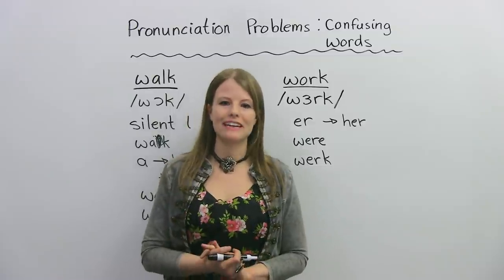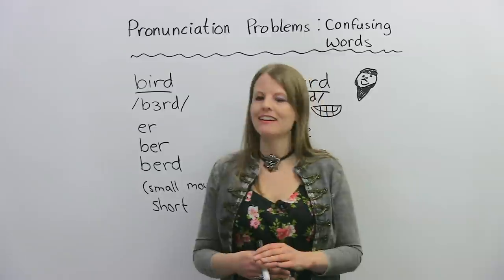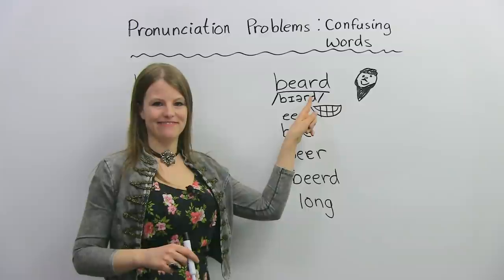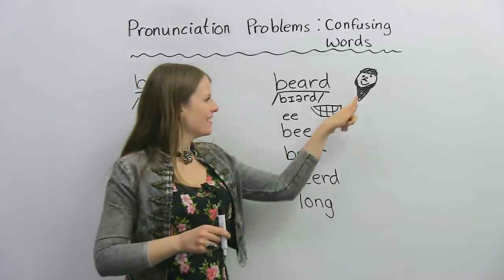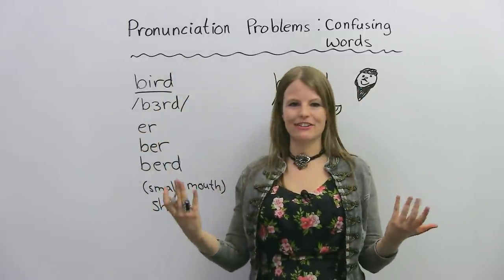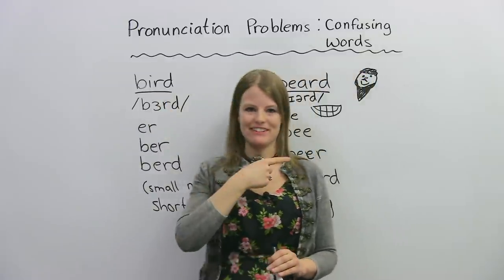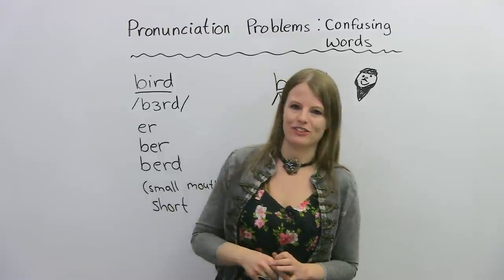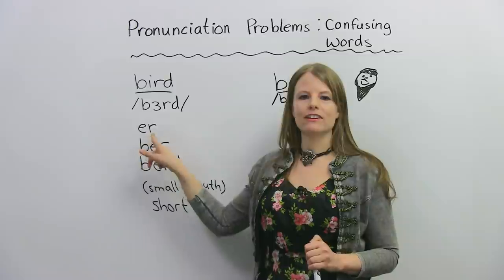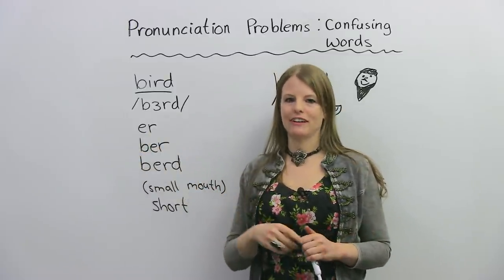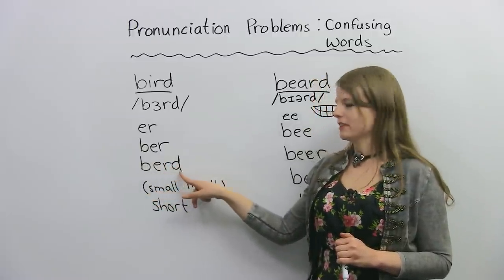Now let's look at some other words that are commonly mispronounced: bird and beard. A beard is the hair coming down from a man's chin. A bird is a type of animal. Many students want to say 'bird' but say 'beard' instead. Let's start with bird. To start with this sound, I want you to make an UR sound — you'll notice a lot of these words have the same UR sound. Bur — bur — bird.